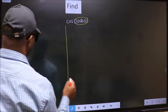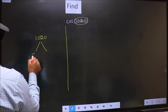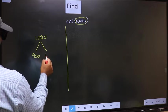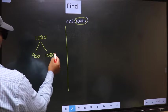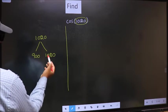What I mean is, 1020 lies between 900 and 1080. This is 180×5 and this is 180×6.